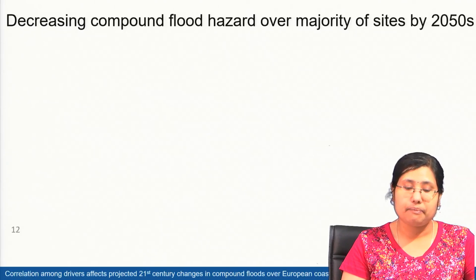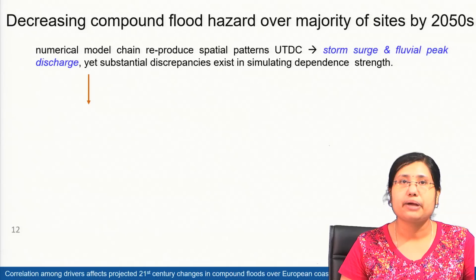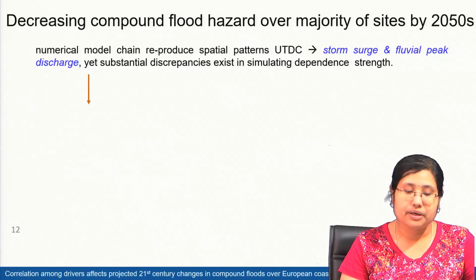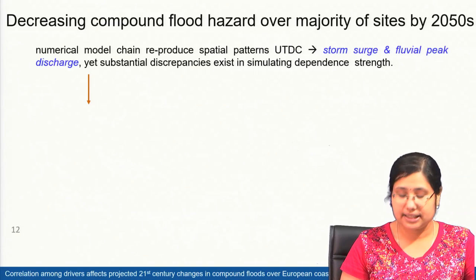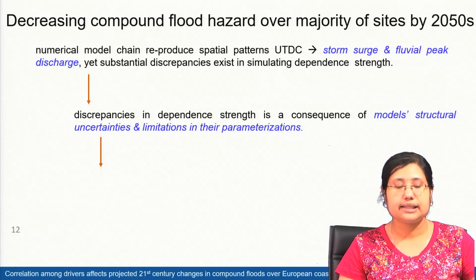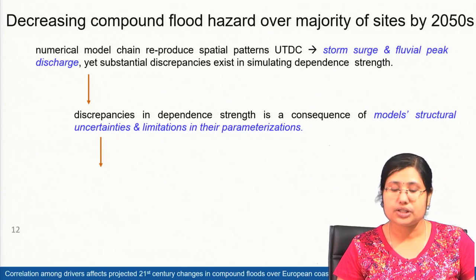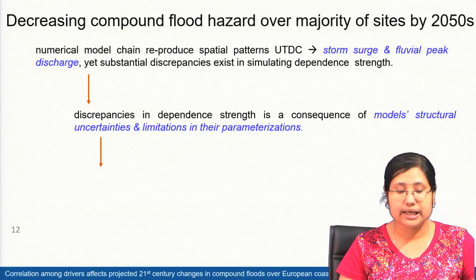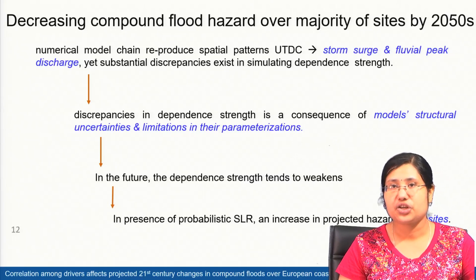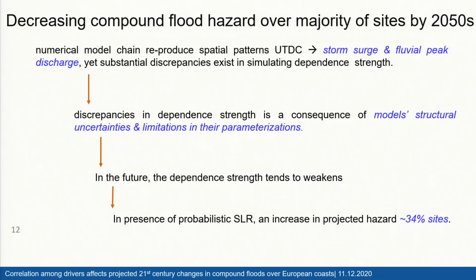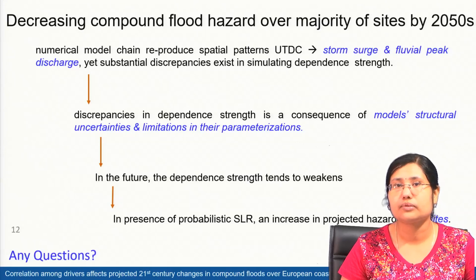In conclusion, we found a decrease in compound flood hazard over the majority of sites by the 2050s. The numerical model chain is able to reproduce the spatial pattern of dependence, but discrepancies exist in the strength of dependence due to model structural limitations and parameterization. However, in the future the dependence strength tends to weaken for all models, but in the presence of sea level rise we find an increase in projected compound flood hazard over 34 percent of sites.